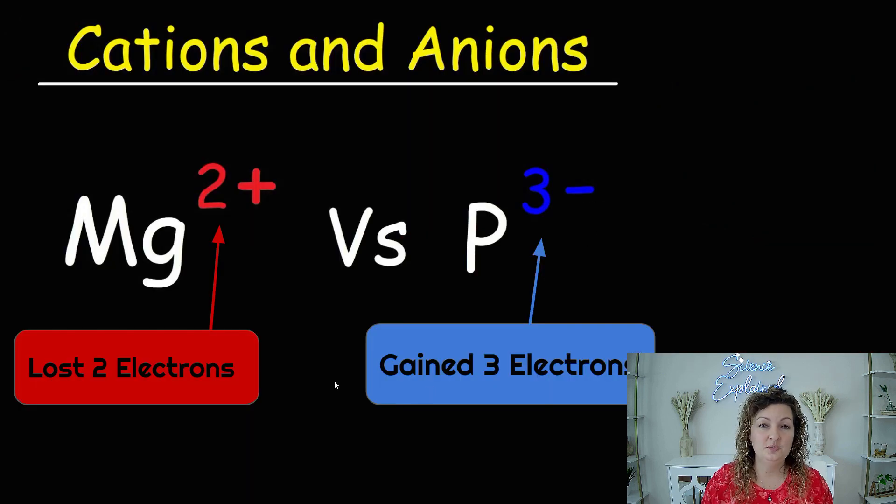So brief review, remember we have two different kinds of ions. We have a cation that's positive, and what that means is that it's going to lose electrons to become positively charged. And then we have an anion which is going to gain electrons to become negatively charged.